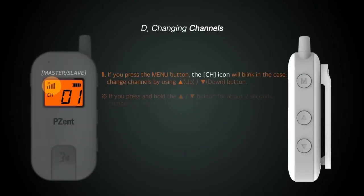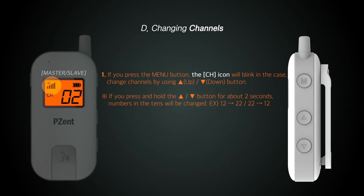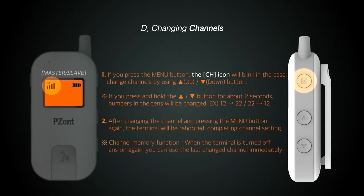This is how to change channels. Press the menu button once. Then use the volume button to move to the desired channel and press the menu button once again. When the LCD window briefly flashes off and on, it is set to the selected channel. With the channel memory function, even when the device is turned off and on again, the default is the newly selected channel.